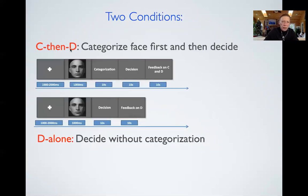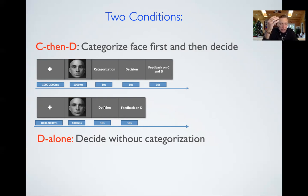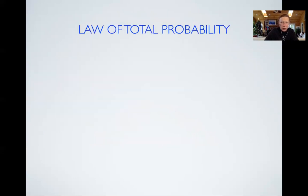We had two important conditions: a categorization-decision-making condition, where you see the face, categorize it as good or bad, and then make a decision; and a decision-alone condition, where you see the face and just make a decision without being asked to categorize. Implicitly you should still categorize because the reward depends on the category, but here the category remains implicit. We compare these two conditions to test the law of total probability.